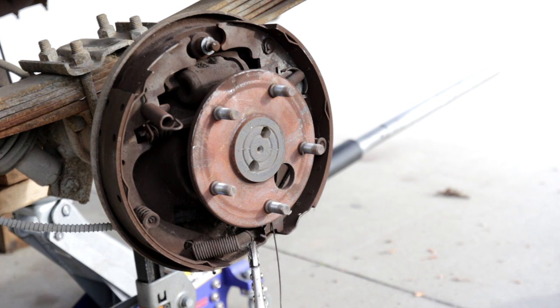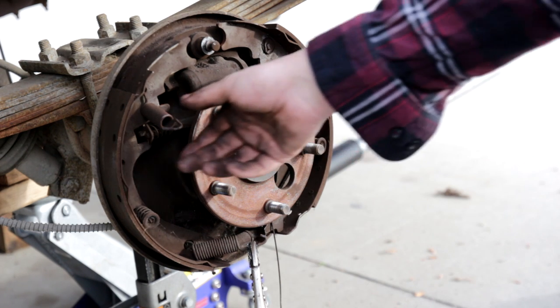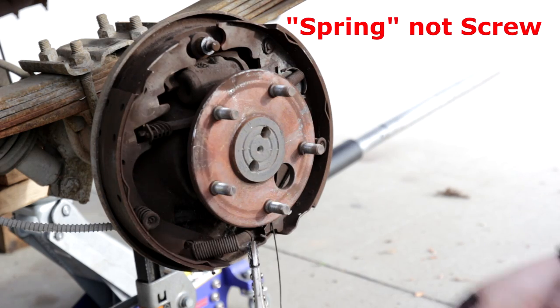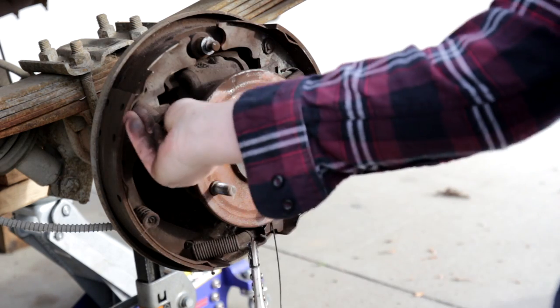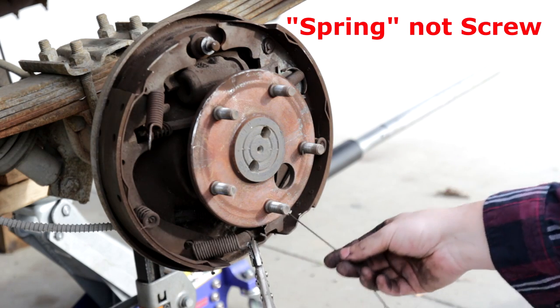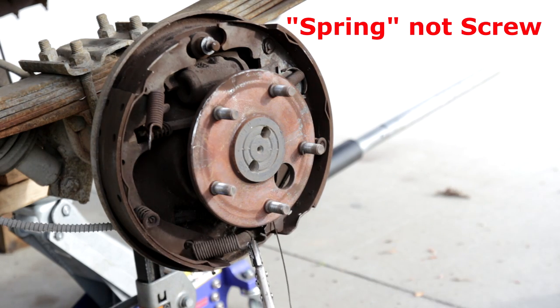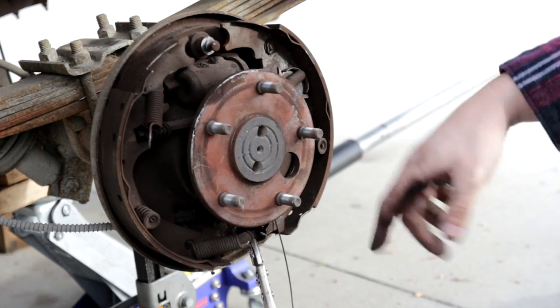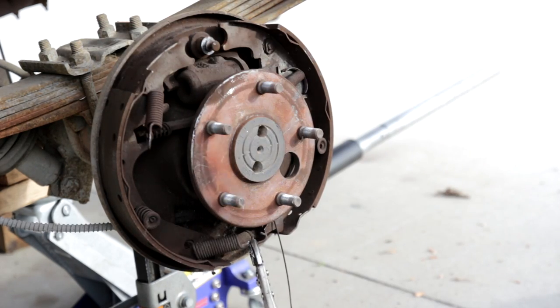Sometimes it requires removing a couple of bolts that are holding the rotor in place. But once you remove the main screws up top, as well as the bottom screw holding in the adjuster plate, then you're able to spread these apart and you're able to gain access to this wheel cylinder.